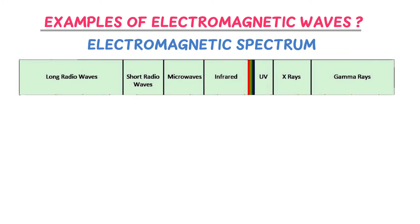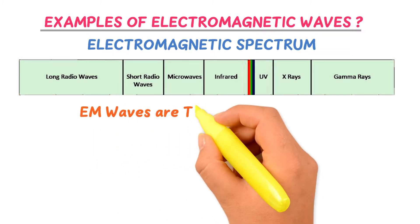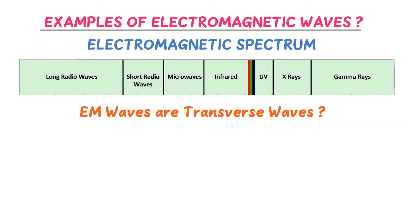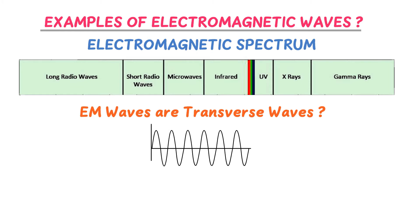Now you should also learn why electromagnetic waves are called transverse waves. These waves are transverse waves because they travel in a successive series of crests and troughs. Secondly, the oscillations of the electric and magnetic fields are perpendicular to the wave motion. So electromagnetic waves are called transverse waves.